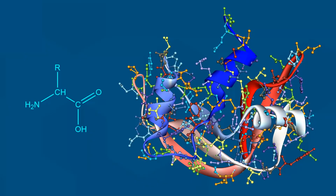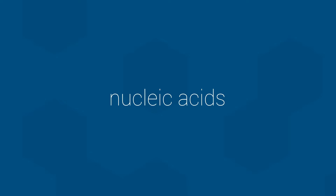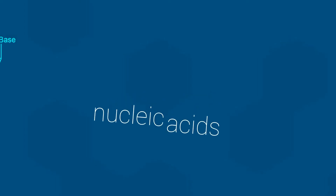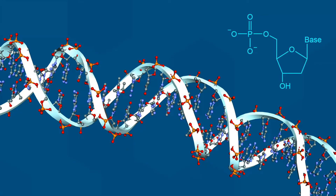If proteins are the tools, then nucleic acids are the instructions. Nucleic acids are composed of subunits called nucleotides. Pretty much everyone has heard of the most famous type: DNA. Not quite as famous, but equally important, is RNA. While some nucleic acids can be used as enzymes — part of the cell's toolbox — we are mostly interested in nucleic acids because of their use in information storage, transfer, and decoding within cells.